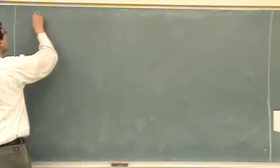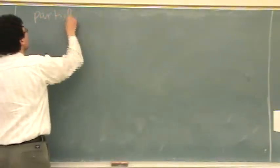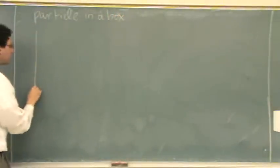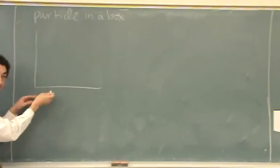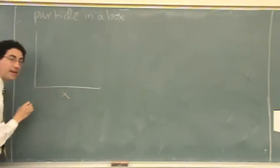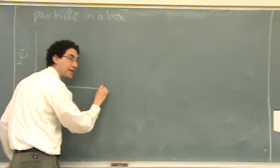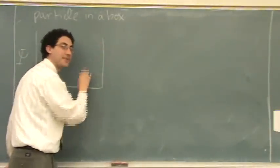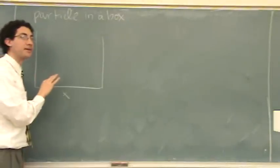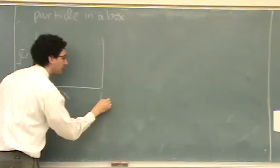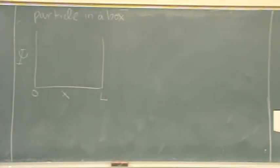We'll do a particle in a box. We draw a y-axis and an x-axis — x right there, and the y-axis we call psi. Just to make it look like a box, we draw that, but it has no meaning other than it looks more like a box. We go 0 and L — that's the template for drawing the graph.